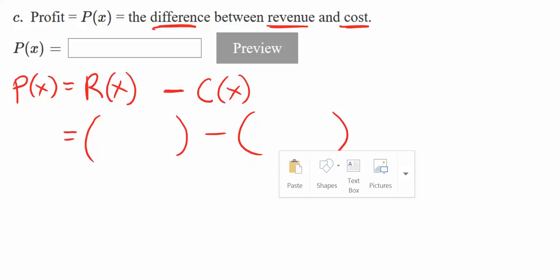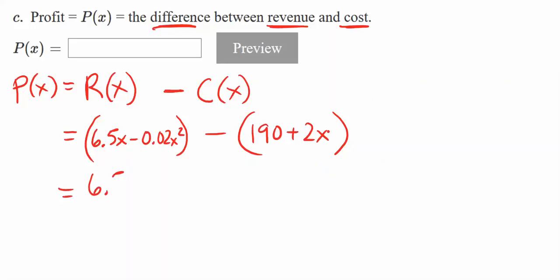The revenue function is 6.5x minus 0.02x squared, and the cost function was 190 plus 2x. Let's put this together. Drop the parentheses first. The negative is going to distribute, so minus 190 and minus 2x. Putting everything together, usually by the highest power of x first.